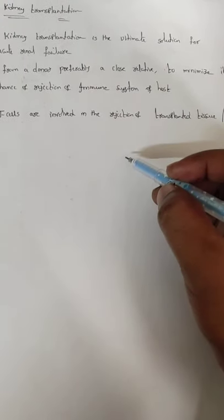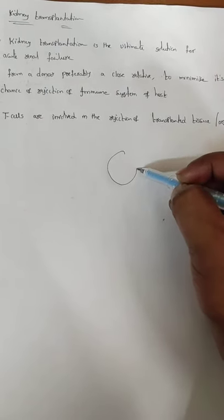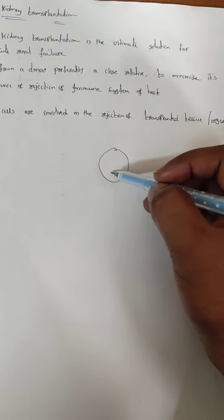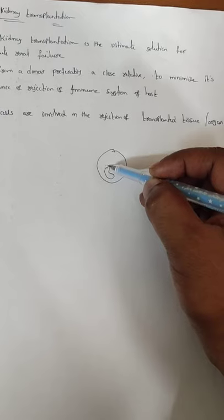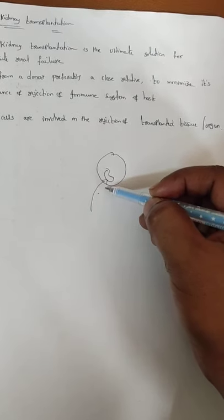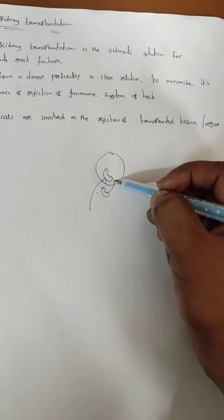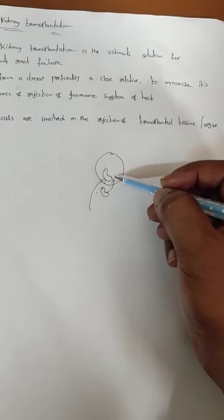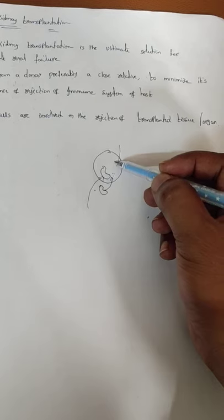Suppose I donate a kidney to a person — my organ is a foreign organ to that body. For this person, the kidney is damaged. I gave a kidney to this person. Now this kidney is a foreign particle to this body. At that time, this body will produce antibodies.